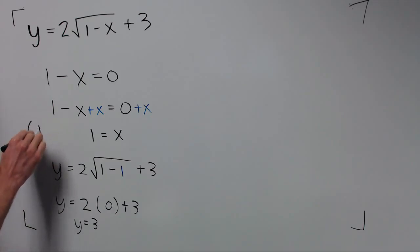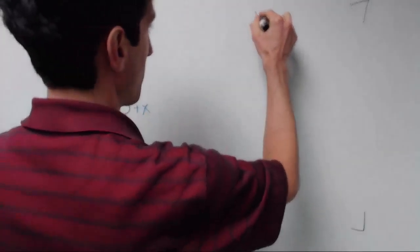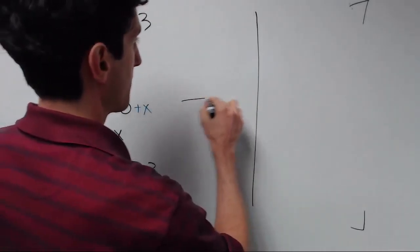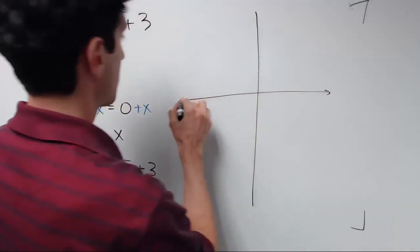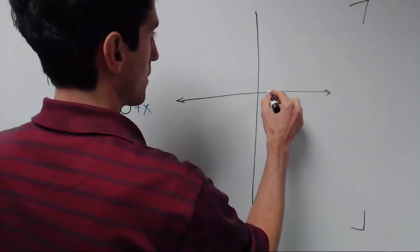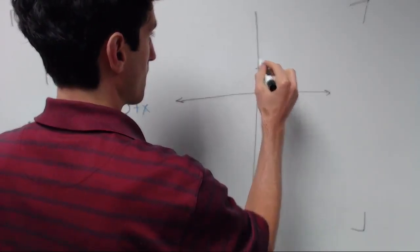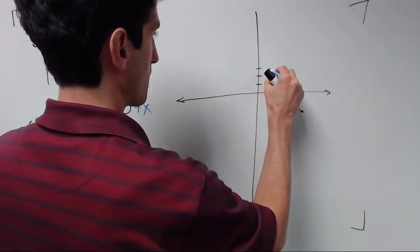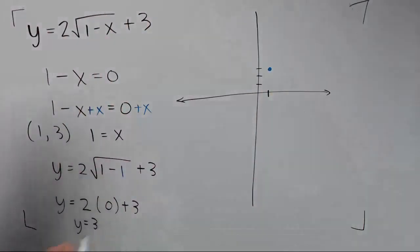And so we see that y is just three. Okay, so our starting point is one, three. There's our starting point.